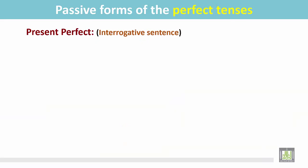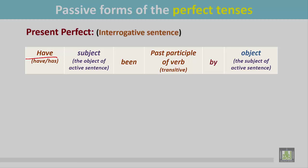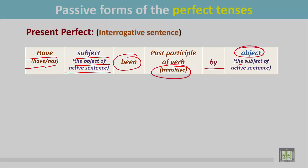Present perfect. Interrogative sentence. See the structure. The sentence begins with 'have' — according to the number and the subject, use 'have' or 'has'. Then the subject, which is the object of the active sentence. Then 'been', followed by the past participle form of the transitive verb. Then 'by', and finally the object, which is the subject of the active sentence.